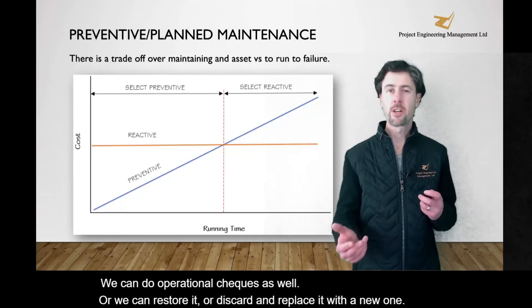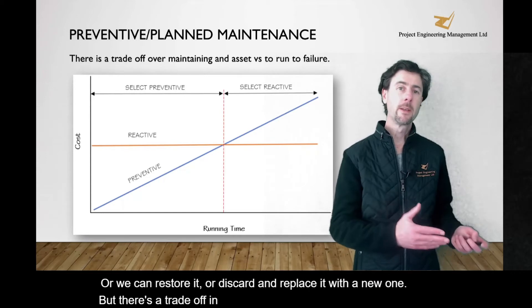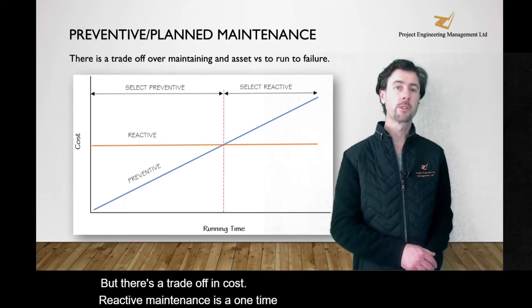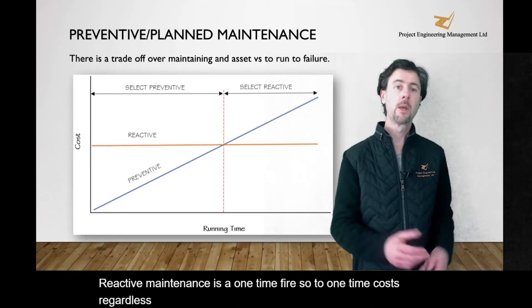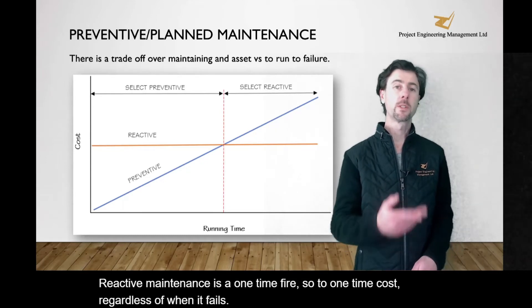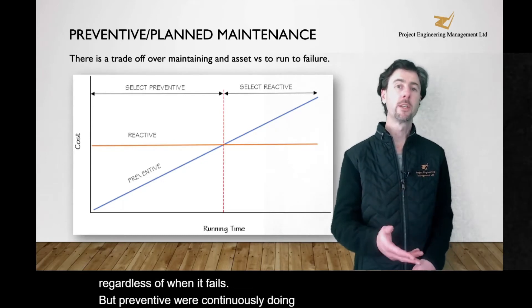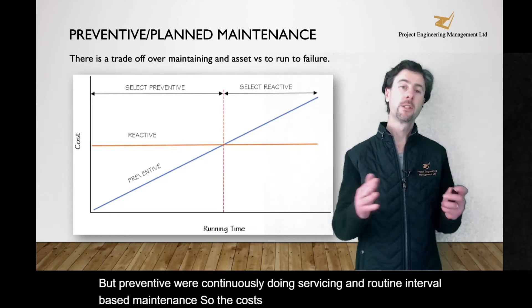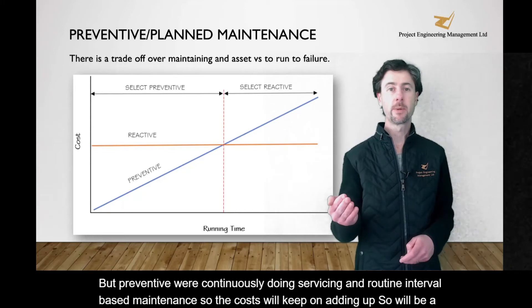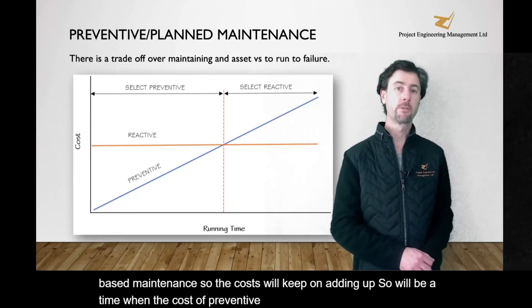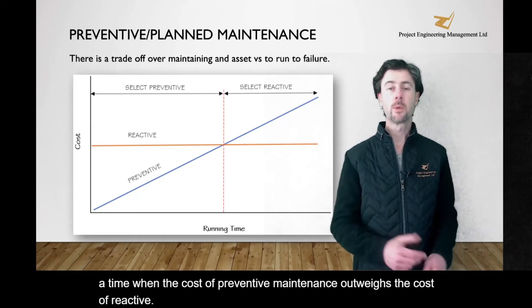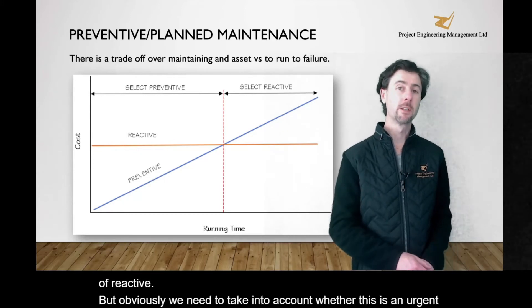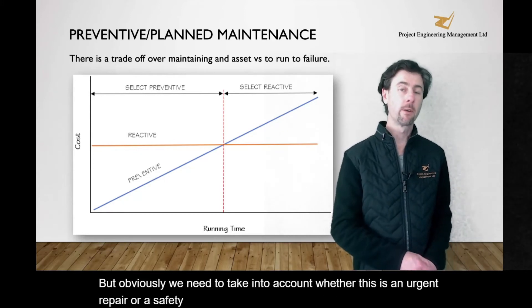But there's a trade-off in cost. Reactive maintenance is a one-time failure, so it's a one-time cost regardless of when it fails. But with preventive maintenance, we're continuously doing servicing and routine interval-based maintenance, so the costs keep adding up. There will be a time when the cost of preventive maintenance outweighs the cost of reactive — but obviously we need to take into account whether this is an urgent repair or a safety- and health-related failure.